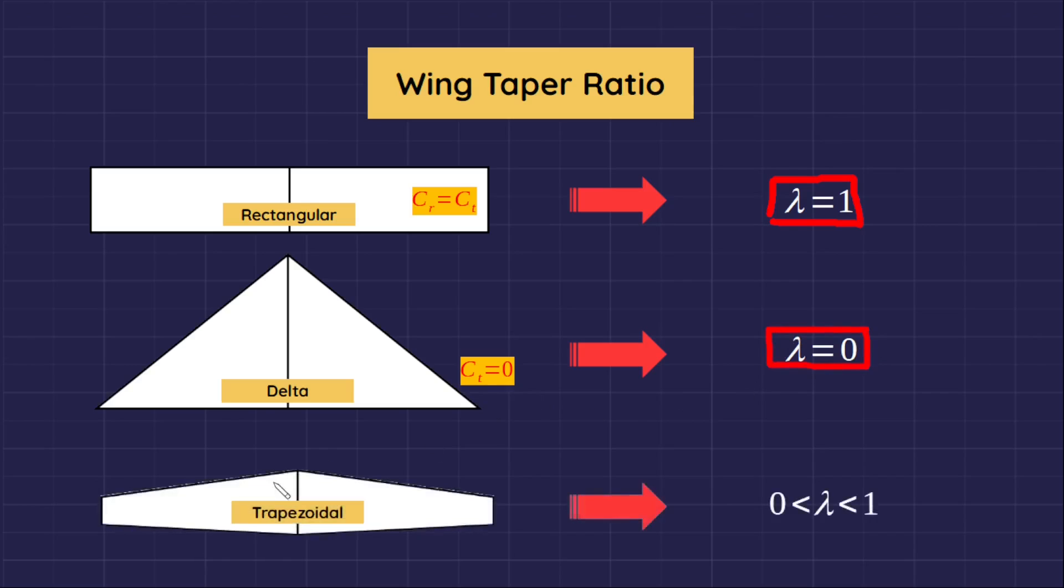For trapezoidal wing, which is a straight-edged and tapered wing platform, and it may have any aspect ratio and may or may not be swept, the taper ratio is less than 1 but greater than 0.